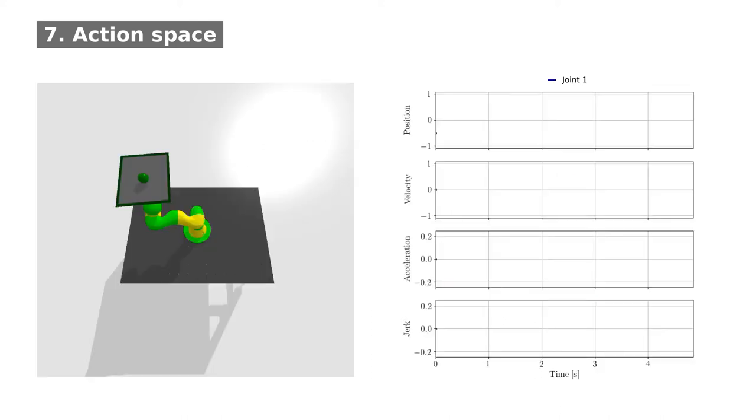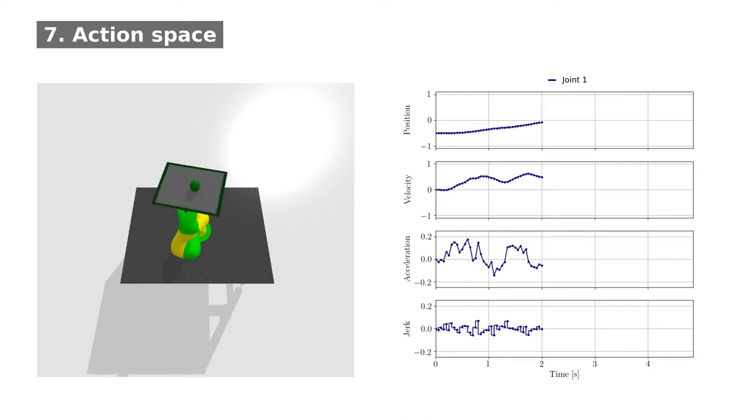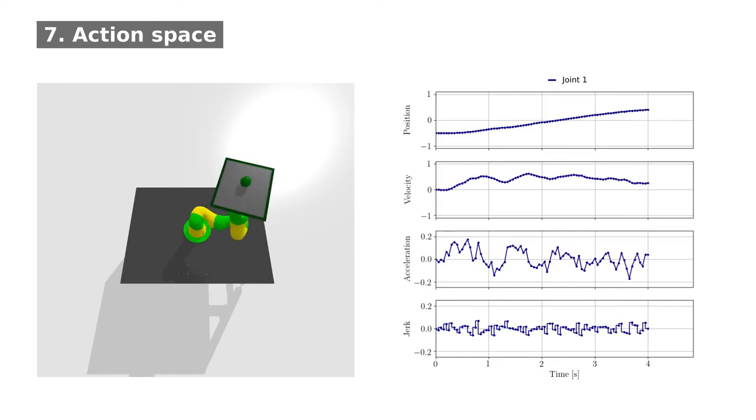So let's check how a trajectory generated by a trained agent looks like. On the right hand side, we can see the predicted accelerations and the position set points, which are computed by integration. The video on the left shows that the resulting trajectory is smooth and succeeds in keeping the ball at its initial place.